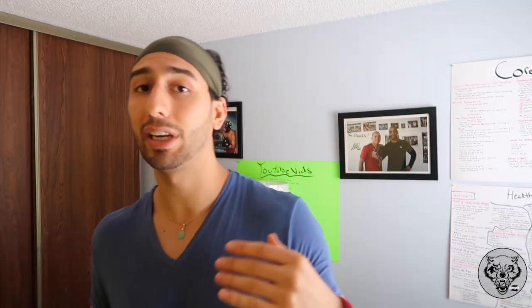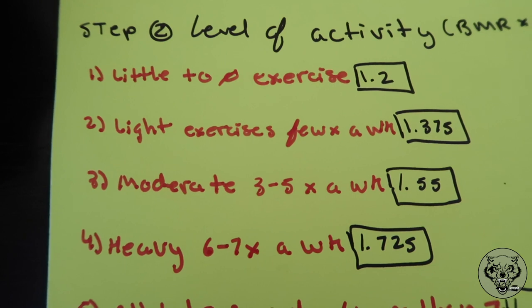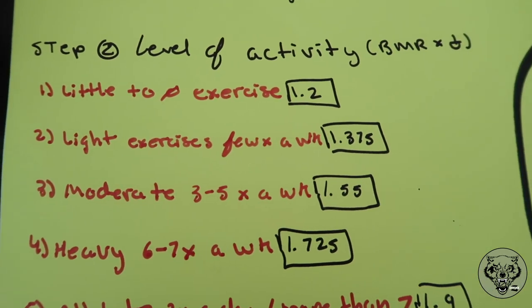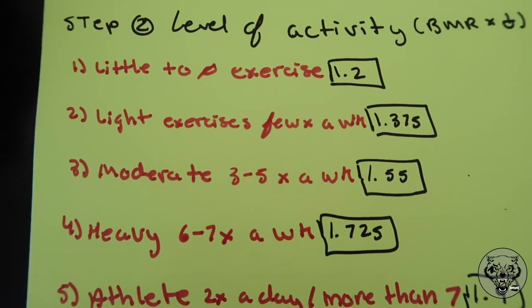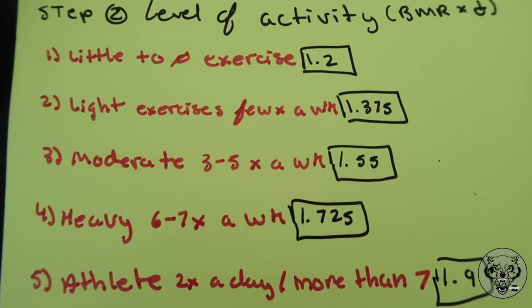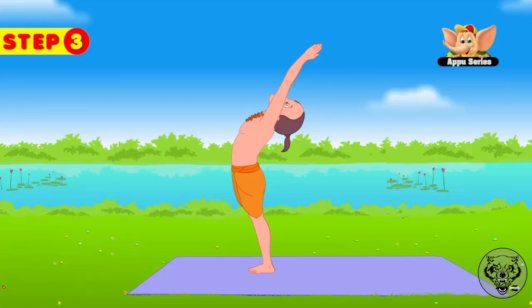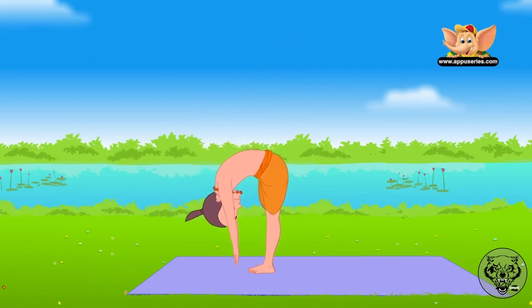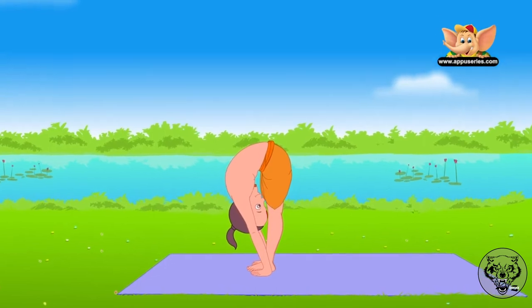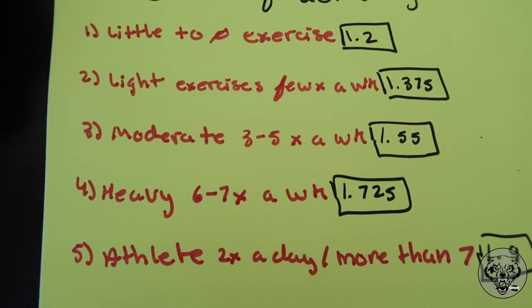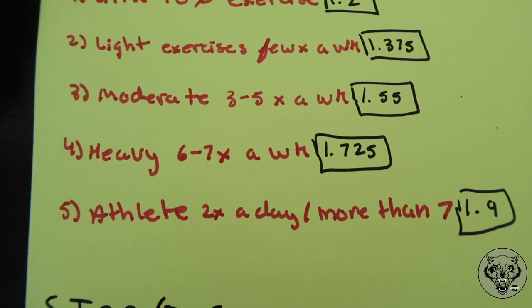From your BMR, you multiply it by an activity level range — there are five different ranges. Little to no exercise: multiply your BMR by 1.2. Light exercise a few times a week — think activities of daily living like walking your dog or light yoga — multiply your BMR by 1.375.